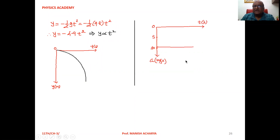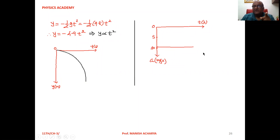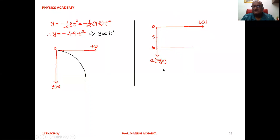For the graph of acceleration versus time, acceleration is constant at −9.8 m/s². So we draw a straight line parallel to the time axis at −9.8, meaning the acceleration does not change with time. This is the acceleration-time graph for a free falling body.